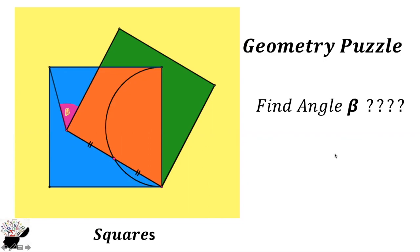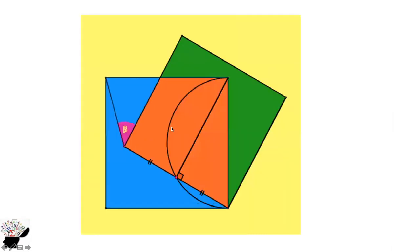Let us consider the solution together. First of all, we know that when we draw a line from this side to the end of the square, since it is a semicircle, the angle here would be 90 degrees because this line will be the diameter of the semicircle. So we are going to get that angle to be 90 degrees.